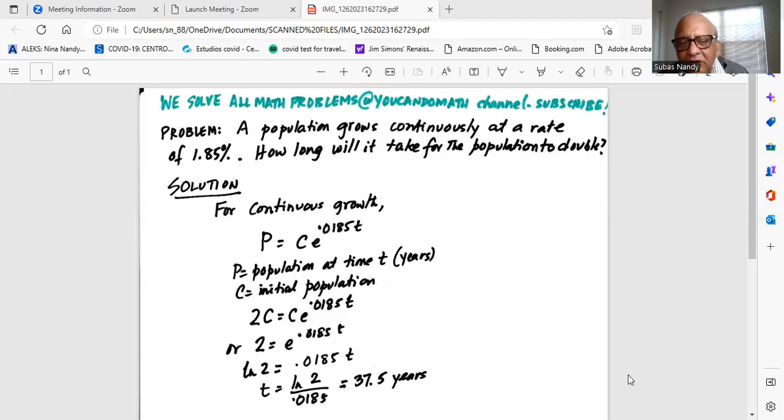Then we take natural logarithm of both sides which is ln 2 is equal to 0.0185T. This is because in the rule of logarithms, the exponent comes in the front.